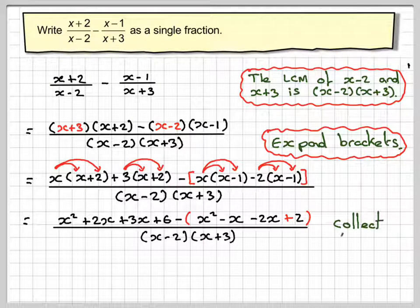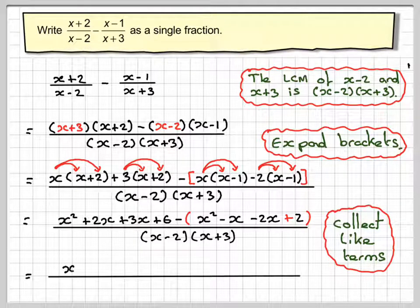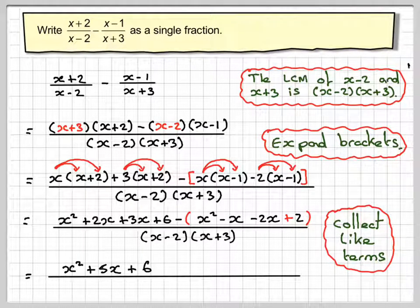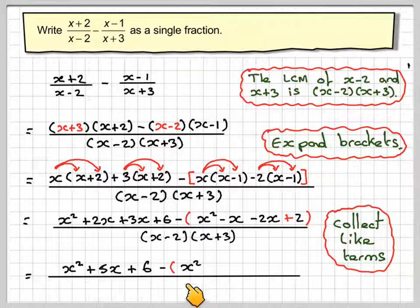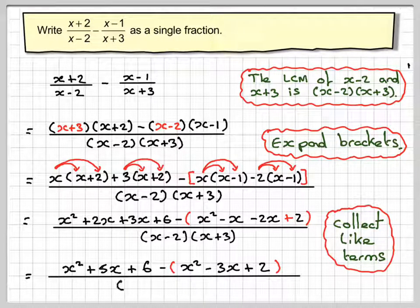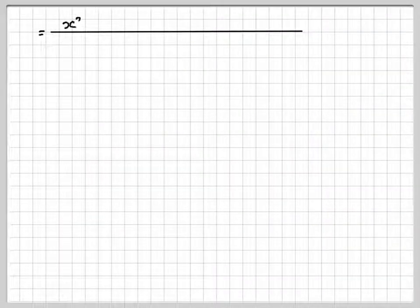So collect together some like terms here. So 2x plus 3x is going to make 5x plus 6. And now we're going to take minus, keep that bracket in, x squared minus x minus 2x makes minus 3x plus 2 over x minus 2x plus 3. This line will now appear on the top of the next slide.